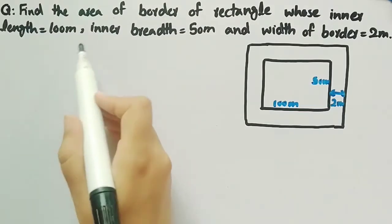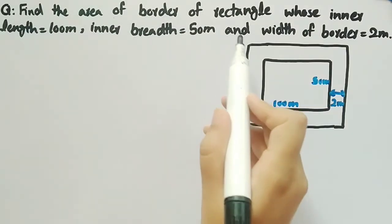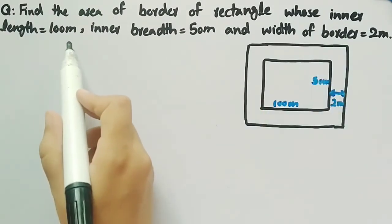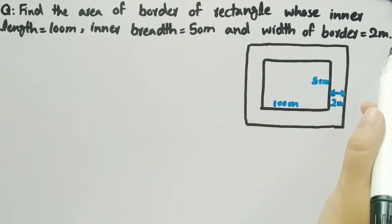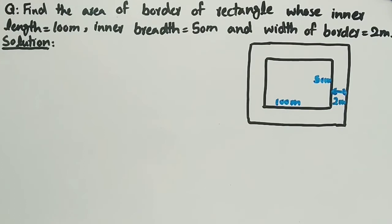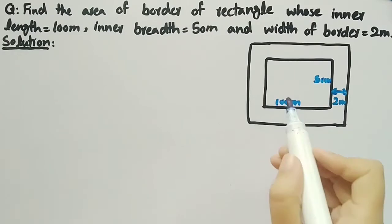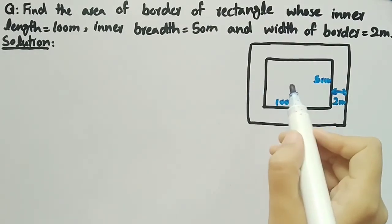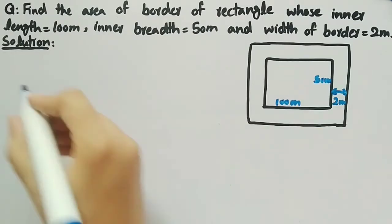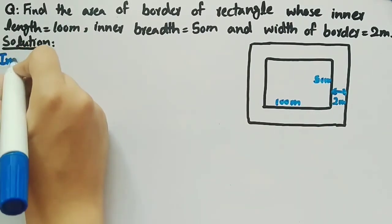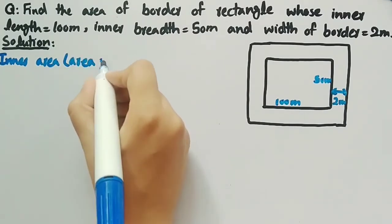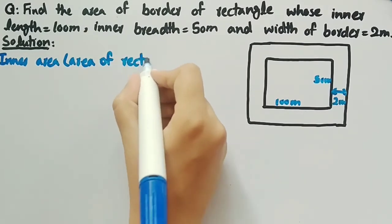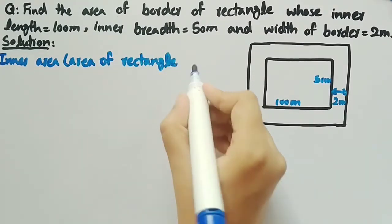In this video, we will find the area of the border of a rectangle whose inner length is 100 meter, inner breadth is 50 meter, and width of border is 2 meter. To find the area of the border, we need the area of the rectangle including the border and the area of the rectangle excluding the border.